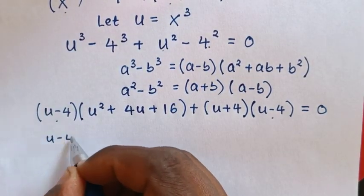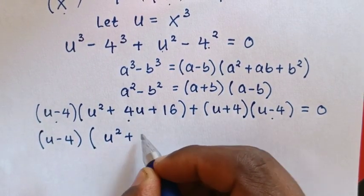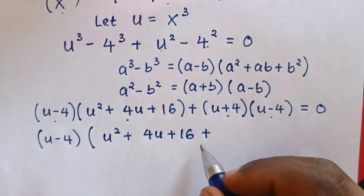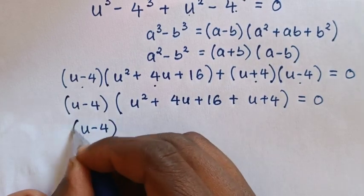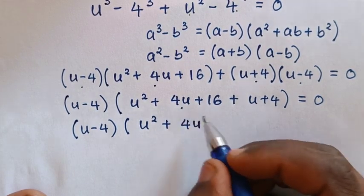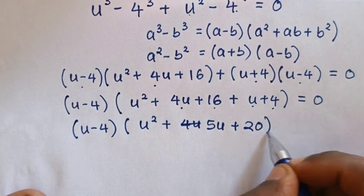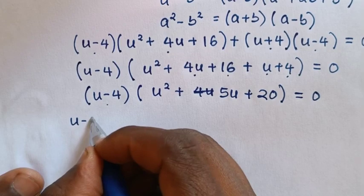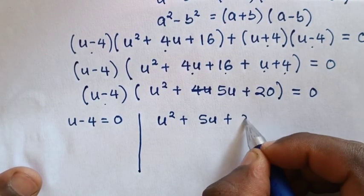We factor out (u minus 4), giving (u minus 4) times (u² plus 4u plus 16 plus u plus 4) equals 0. Combining like terms: 4u plus u is 5u, and 16 plus 4 is 20. So we get (u minus 4)(u² plus 5u plus 20) equals 0. This gives two cases: u minus 4 equals 0, or u² plus 5u plus 20 equals 0.